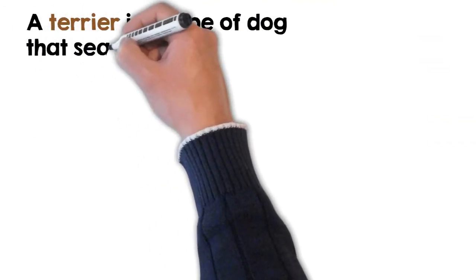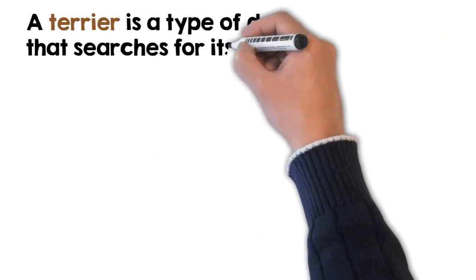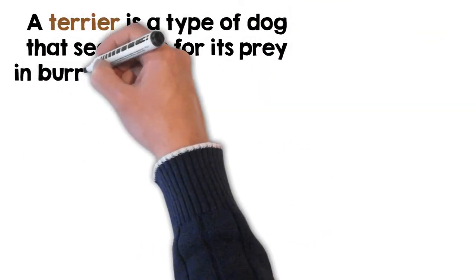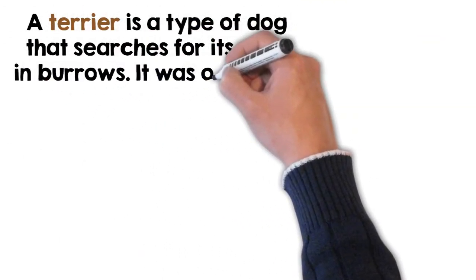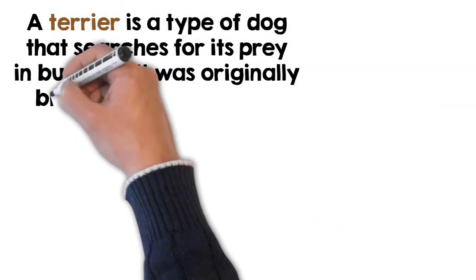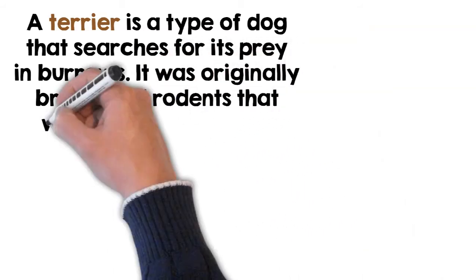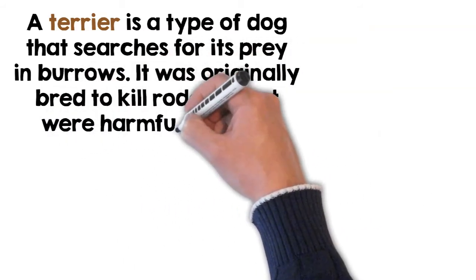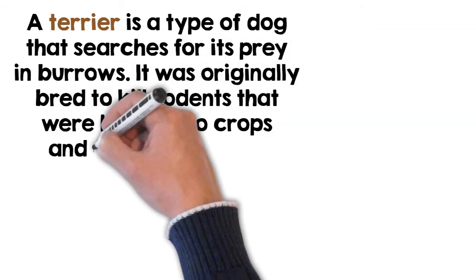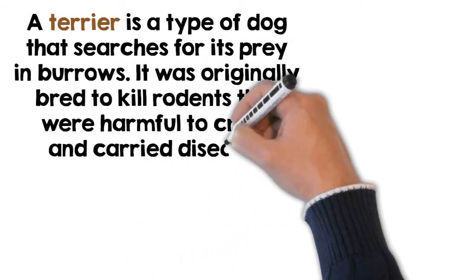A terrier is a type of dog that searches for its prey in burrows. It was originally bred to kill rodents that were harmful to crops and carry diseases.